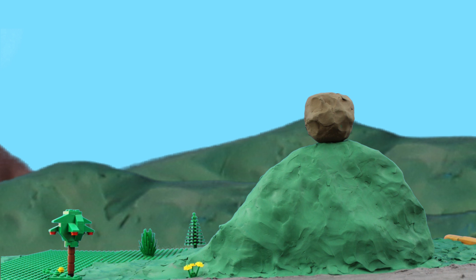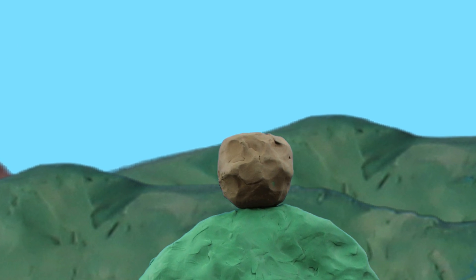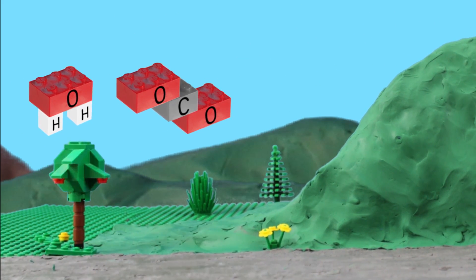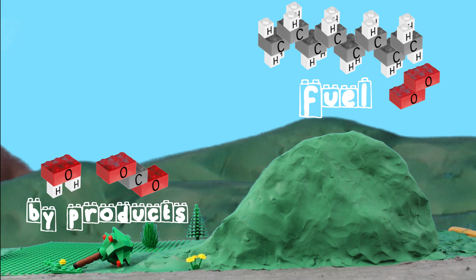This could be visualized as a ball on top of a hill. The fuel starts in a stable state. It's given a push and energy is released, forming the byproducts. The difference in energy between the starting material and the byproducts is used by the people of Bricktown to power their society.